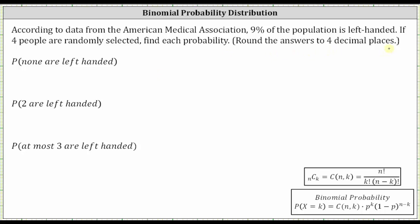To begin, we need to recognize that we have a binomial probability distribution. Because four people are being selected at random, N, the number of trials, is four. And because 9% of the population is left-handed, P, the probability of success, is equal to 9%, which is equal to 0.09 as a decimal.